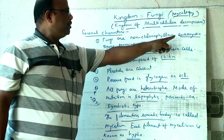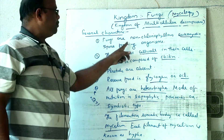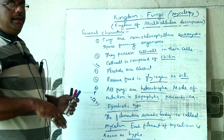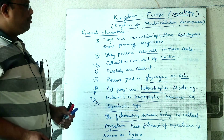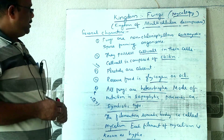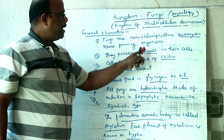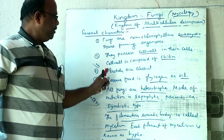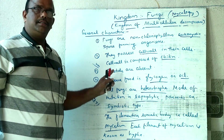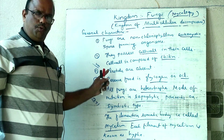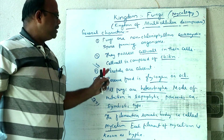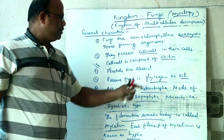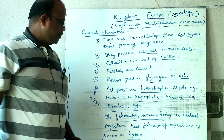Fungi are non-chlorophyllous eukaryotic spore-forming organisms. Fungi live as saprophytes, parasites, or symbionts. The cell wall of fungi is composed of chitin. Plastids — including chloroplasts, chromoplasts, and leucoplasts — are totally absent. The food reserve of fungi is glycogen or oil. All fungi are heterotrophs.